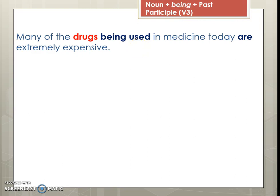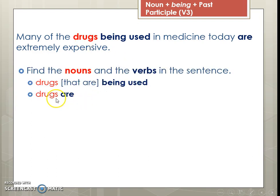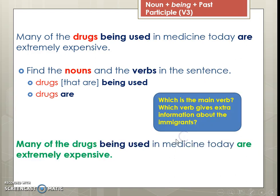Sometimes we have a pattern of a noun followed by a past participle — confusing, too many verbs. 'Many of the drugs being used in medicine today are extremely expensive.' We're missing the 'is,' 'are,' 'was,' or 'were.' So we say: 'many of the drugs are extremely expensive.' What do we know about these drugs? The drugs are being used in medicine today. Expanded: 'many of the drugs that are being used in medicine today are extremely expensive.'